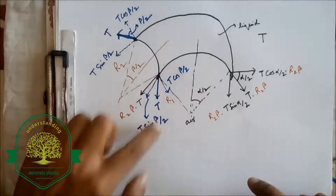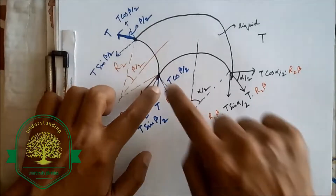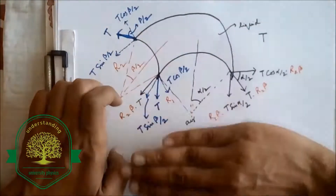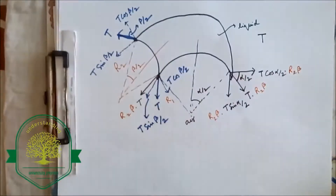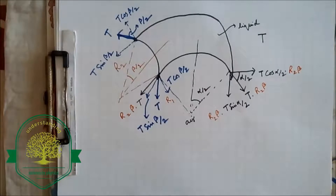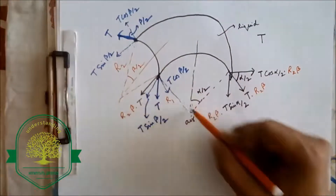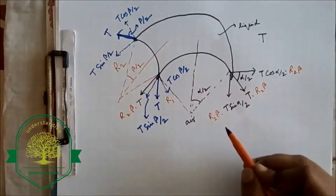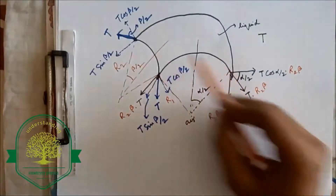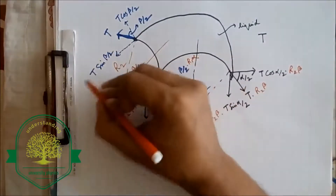These forces are forces per unit length — they are acting per unit length on these sides. Their horizontal components will cancel out and their vertical components will get added. These are only forces per unit length, so the length I will have to consider is this side. The radius of curvature of this side is R1 and the angle subtended at the center is alpha, so these forces per unit length get multiplied with R1·α to find the net force on this side.